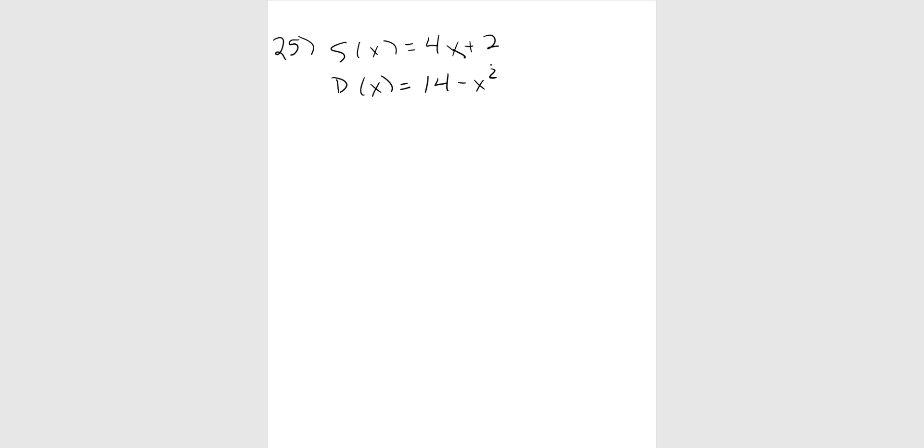This is the last part of the review, so here's some word problems. We're going to start with number 25, where I've given you two functions. The first one is the supply function is 4x plus 2, and the demand function is 14 minus x squared. For part A, I want to know how many items will be sold in market equilibrium. We know market equilibrium means supply equals demand.